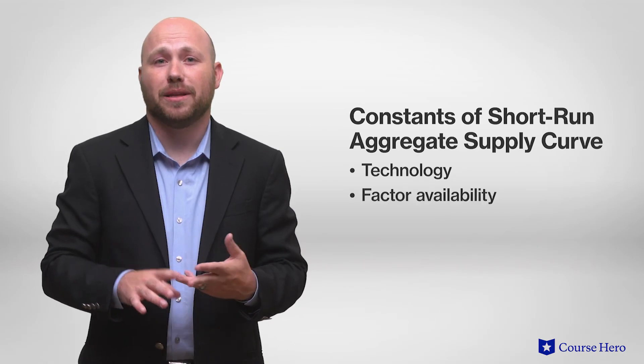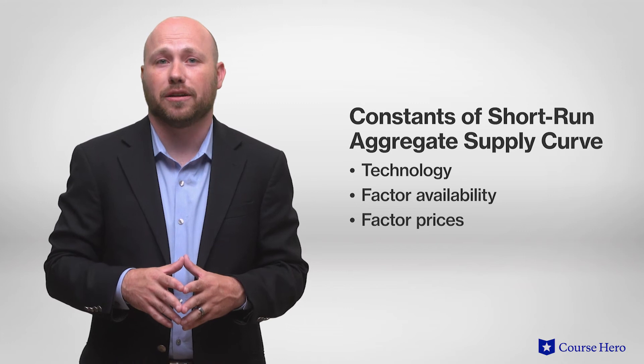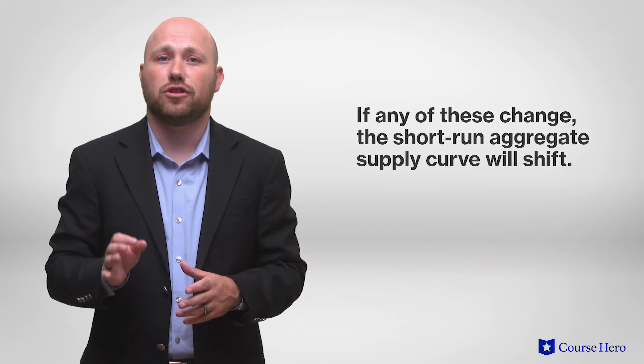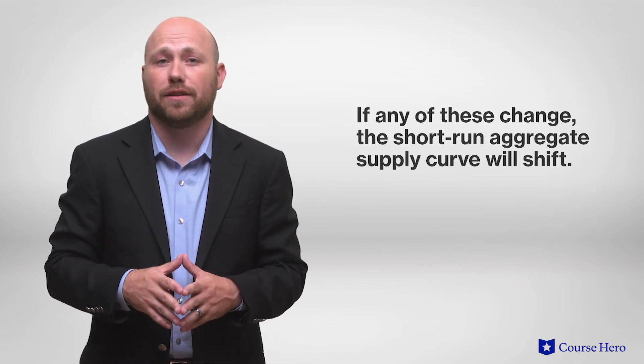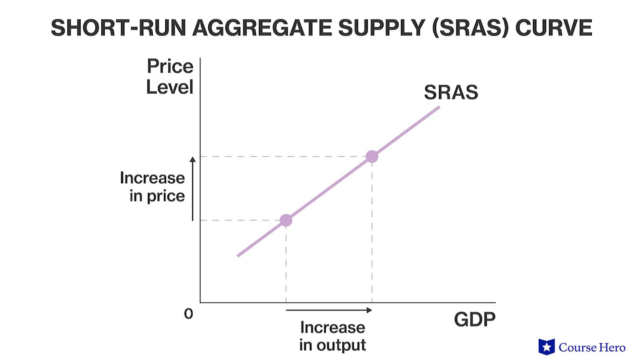Technology, factor availability, and factor prices are held constant along the short-run aggregate supply curve. If any of these change, the short-run aggregate supply curve will shift. If input prices rise, firms will find the profitability of their current production reduced. For any given level of output, an increase in the price level will be required to achieve the same level of profitability. If price levels do not increase, firms will react by decreasing production. Graphically, this is represented by a leftward shift in the short-run aggregate supply curve.